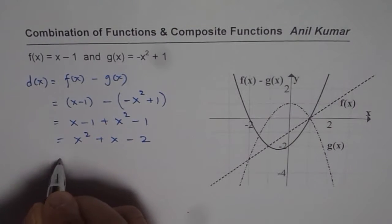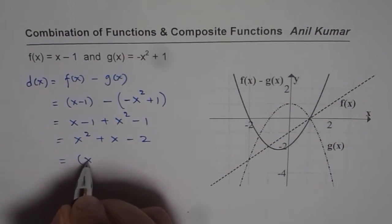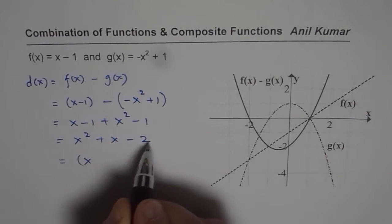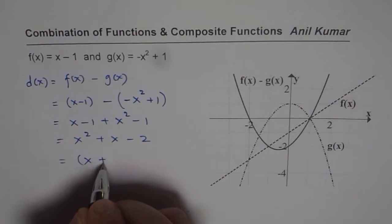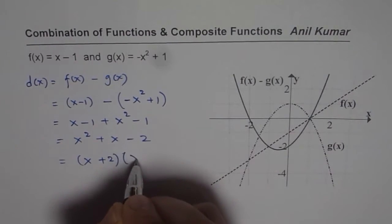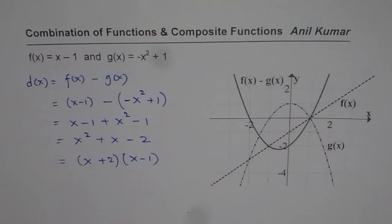Now this can be factored. So I can write this as x minus 2 is the product. And the sum is plus 1. So it will be plus 2 minus 1. So that is what you get as the difference of these two functions.